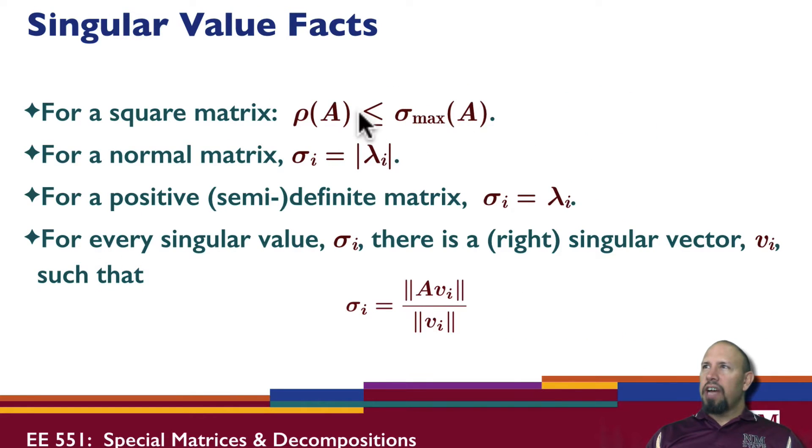Here are some singular value facts. If I take the spectral radius of a matrix, that's less than or equal to the largest singular value of the matrix, and this is true for any square matrix. If my square matrix is a normal matrix, then the singular values, each of the singular values is equal to the magnitude of the eigenvalues. So in this case, I have this relationship. This is only for normal matrices, not just for any matrix. It only holds for normal matrices.